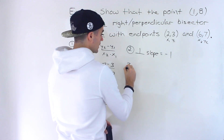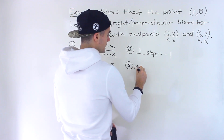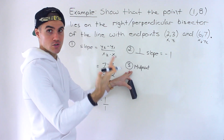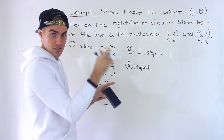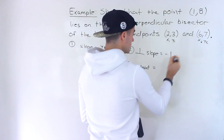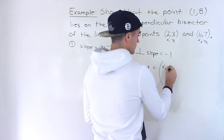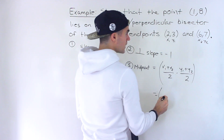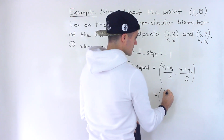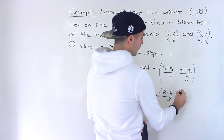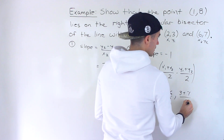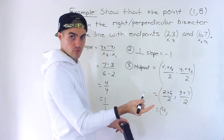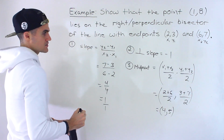We have the slope. We also need to find the midpoint of this line segment, because we'll use it to find the equation of the perpendicular bisector — the midpoint is going to be on the perpendicular bisector. The midpoint formula is (x1 + x2)/2, (y1 + y2)/2. So we do (2 + 6)/2 and (3 + 7)/2, giving us 8/2 = 4 and 10/2 = 5. So the midpoint is (4, 5).